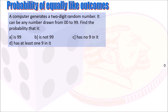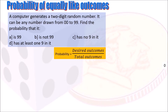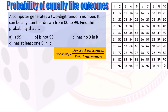Let's look at this example. A computer generates a two-digit random number — it can be any number from 00 to 99. Find the probability that it is 99, it is not 99, it has no nine in it, or it has at least one nine in it. To get the probability of an outcome, we divide the desired outcomes by the total number of outcomes. We will use a number square to identify the total outcomes. From 00 to 99 there is a total of 100 numbers — that is our sample space.